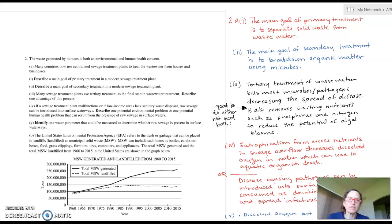Going through part A, part A1 asks you to describe a main goal of primary treatment in modern sewage treatment plants. You have to understand that treatment plants are broken up into primary, secondary, and often tertiary treatment. The main goal of primary treatment is to separate solid waste from wastewater. As long as you're talking about separating out the sludge or the solid waste from the wastewater, that is the primary treatment.